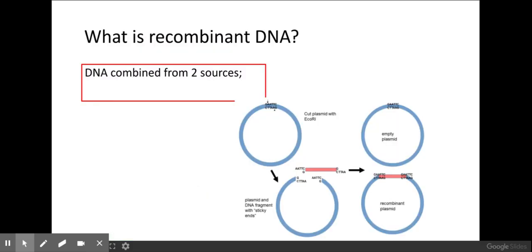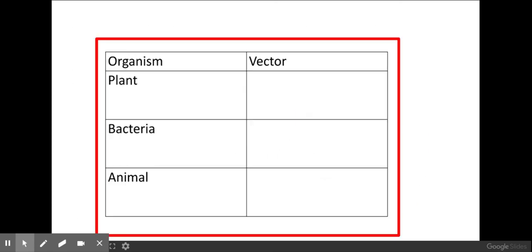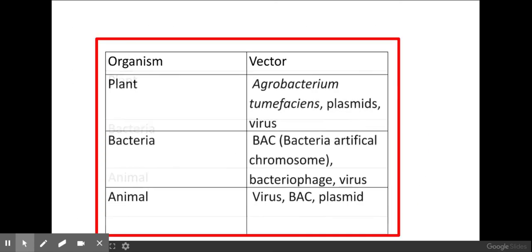Two more definitions to be aware of: recombinant DNA is DNA combined from two sources — for example, the plasmid containing the desired gene. Finally, you need to know the different vectors that can be used in different organisms; this is highlighted in a red box as it comes directly from the mark scheme.